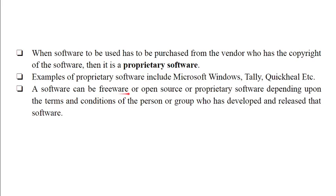A software can be freeware, open source, or proprietary software depending upon the terms and conditions of the person or group who developed and released it. Free software is available free of cost; open source software has its source code available for modification and redistribution; and proprietary or copyright-protected software does not allow access to the source code, so we cannot make any changes, and redistributing it may cause legal issues.